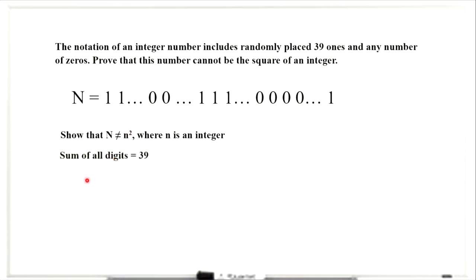First of all, we determine the sum of all digits, and it equals 39. Then we apply the divisibility test for 3. This test states that a number is completely divisible by 3 if the sum of its digits is divisible by 3. We see that 39 is divisible by 3.